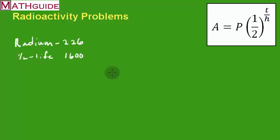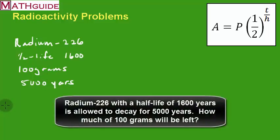Let's say we're going to figure out how much of 100 grams will be left after 5,000 years. For instance, the problem may say: radium-226 with a half-life of 1,600 years is allowed to decay for 5,000 years. How much of 100 grams will be left? Let's actually deal with this problem.